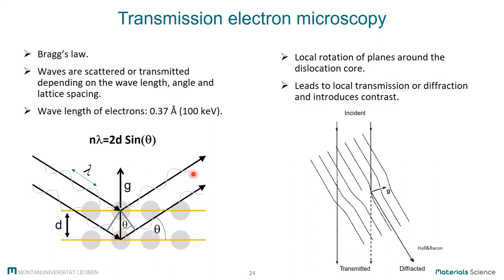The main way to determine whether there is a dislocation in the material by TEM is to get near to the Bragg condition in your sample. Due to the rotation of the lattice planes around the dislocation, there will be places where the condition is met exactly, giving diffraction in specific locations around the dislocation. Elsewhere you have transmission, and that means you will see a dark line in your TEM experiment. So you don't see the dislocation itself, but what you see is the rotation of the lattice planes.